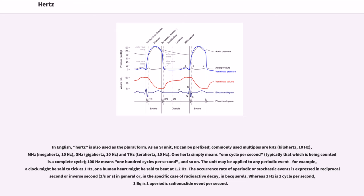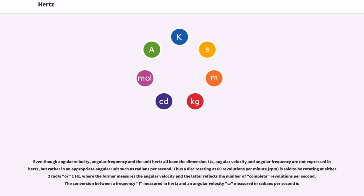Even though angular velocity, angular frequency, and the unit hertz all have the dimension 1/s, angular velocity and angular frequency are not expressed in hertz, but rather in an appropriate angular unit such as radians per second. Thus a disk rotating at 60 revolutions per minute (RPM) is said to be rotating at either 2π rad/s or 1 hertz, where the former measures the angular velocity and the latter reflects the number of complete revolutions per second.